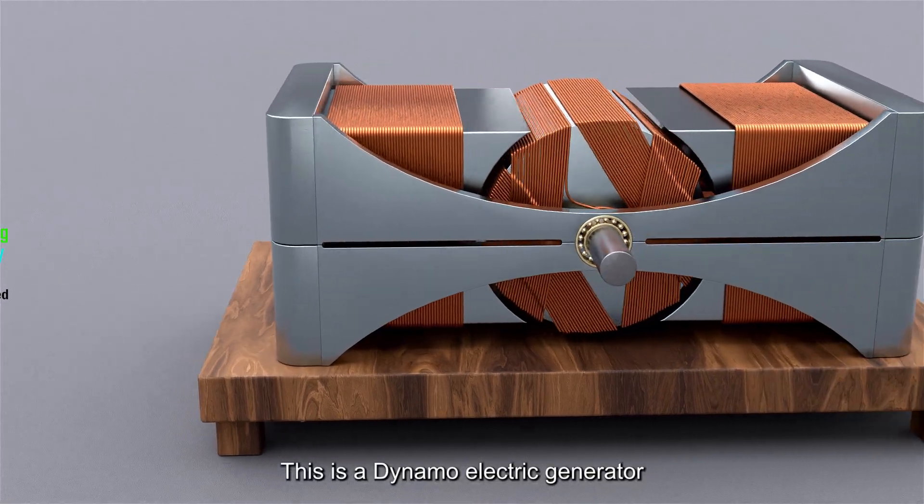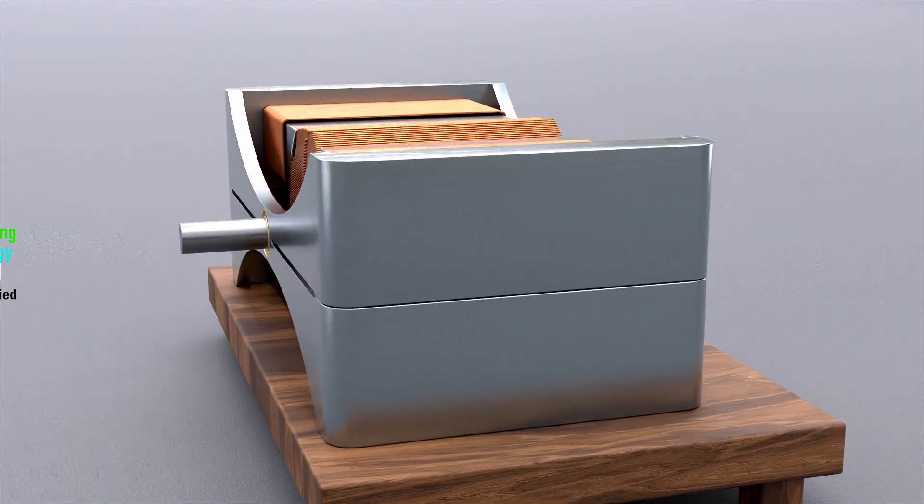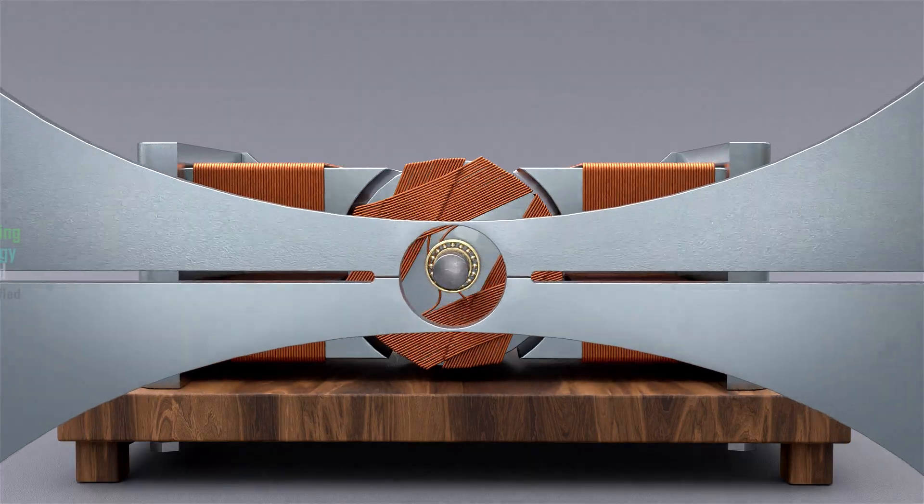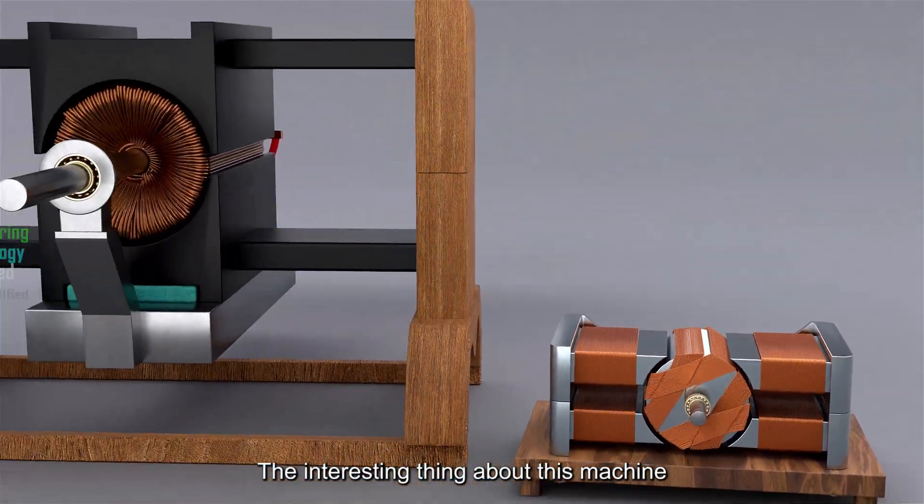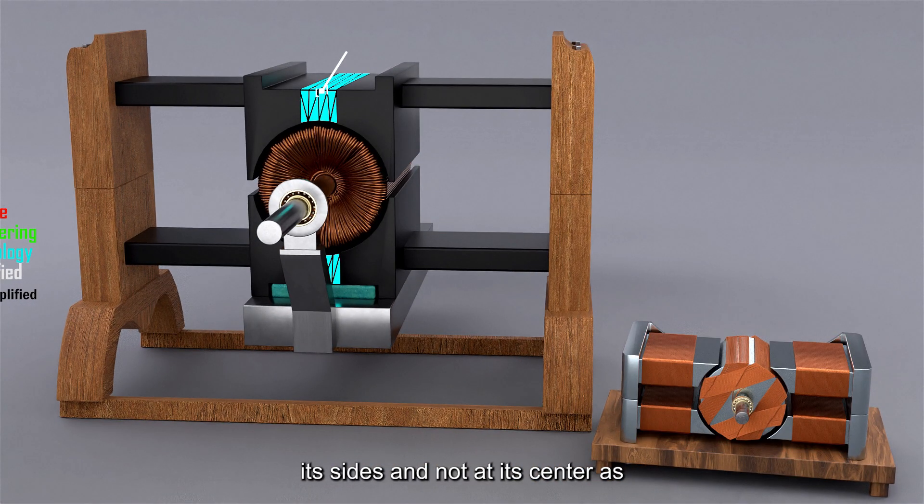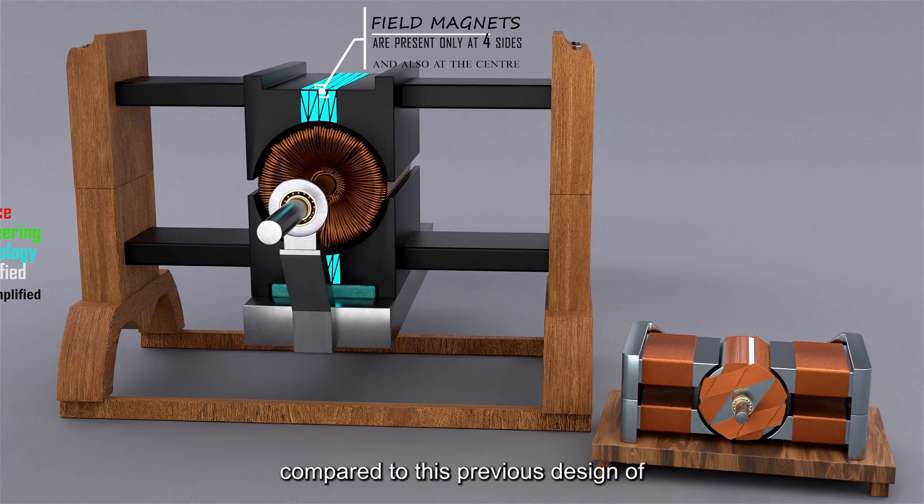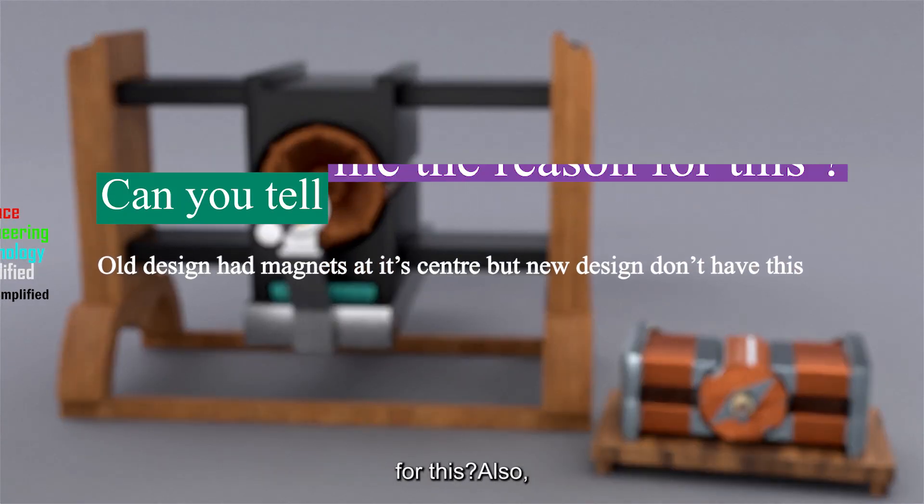This is a dynamo electric generator designed by Nikola Tesla. The interesting thing about this machine is that it has field magnets present at its sides and not at its center, as compared to this previous design of Nikola Tesla. Can you tell me the reason for this?